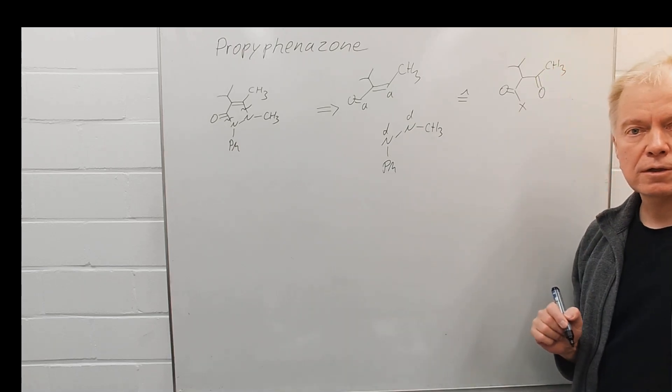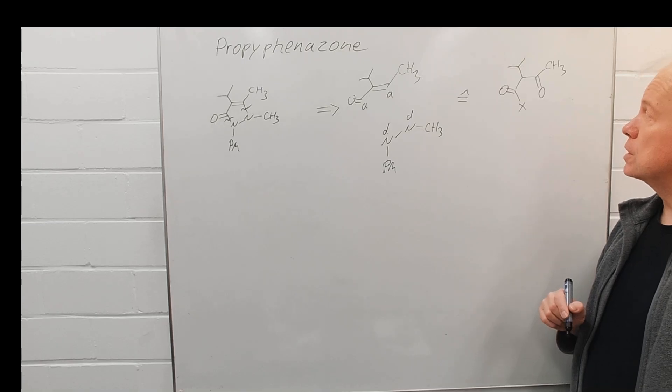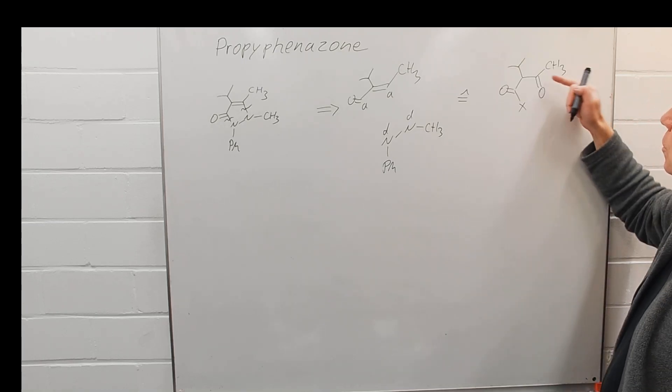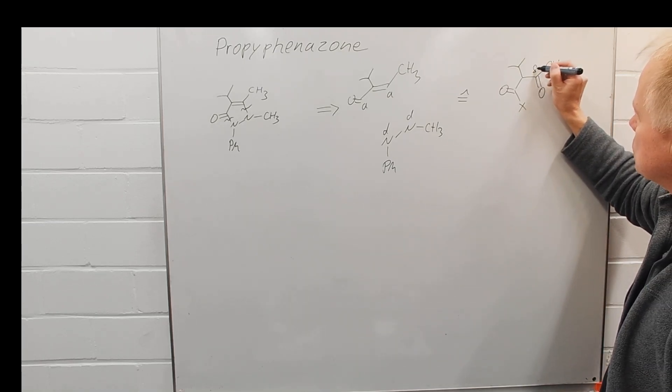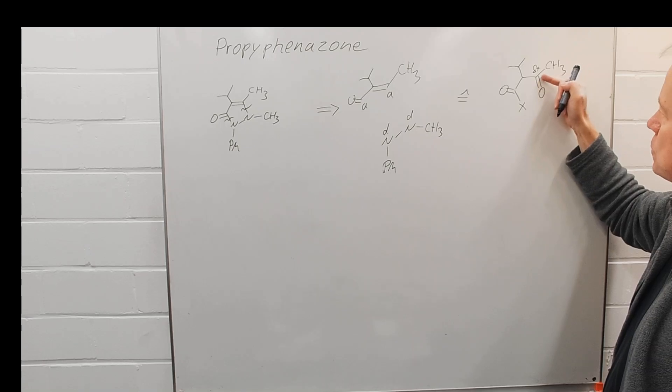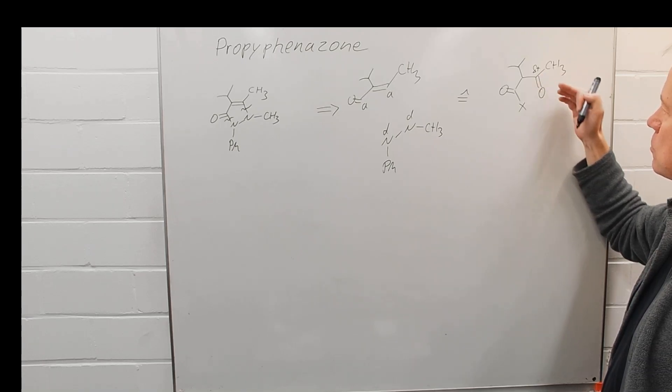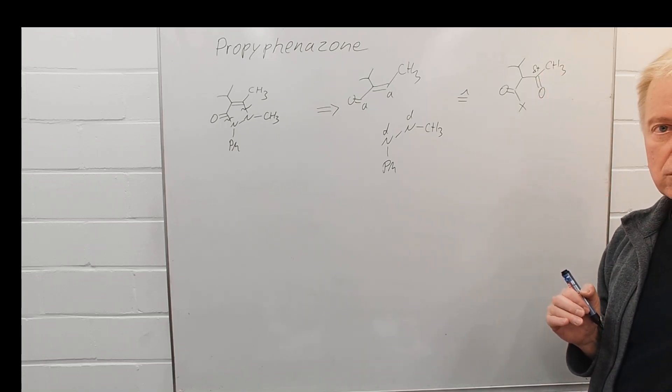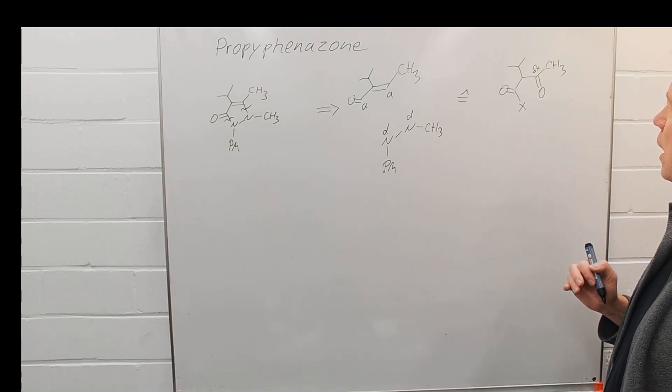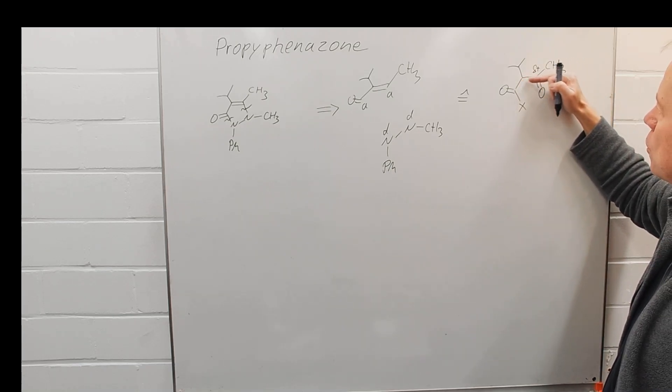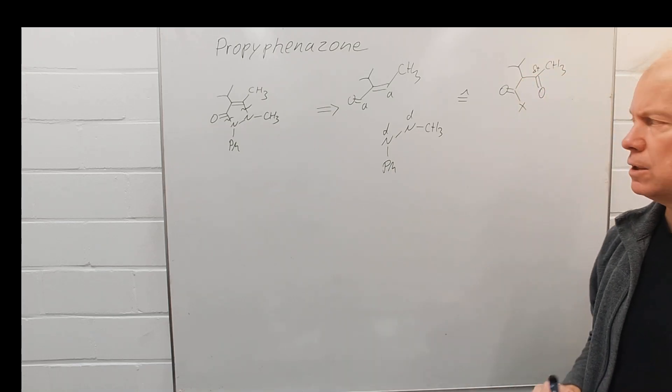...to just translate it into a carbonyl group because with the delta plus here, this is an electrophilic center. By condensation reaction we will get either the double bond here or the double bond there - both tautomers.